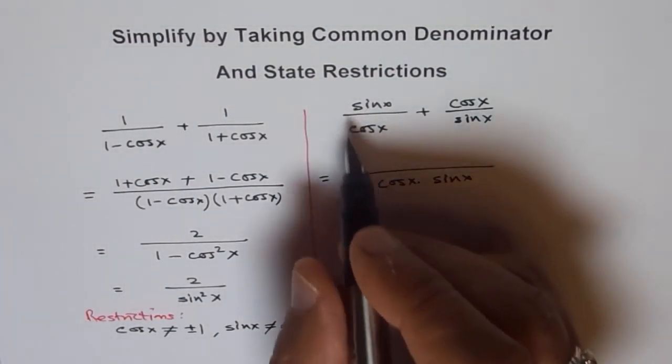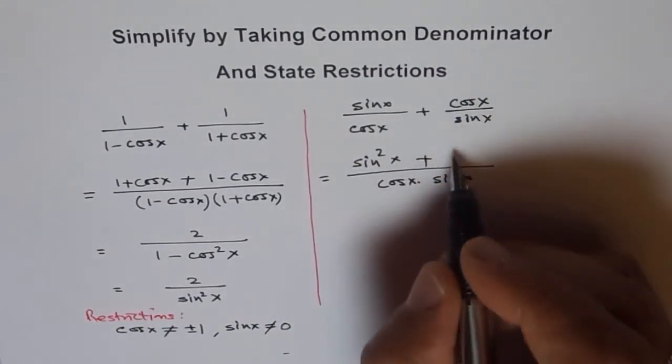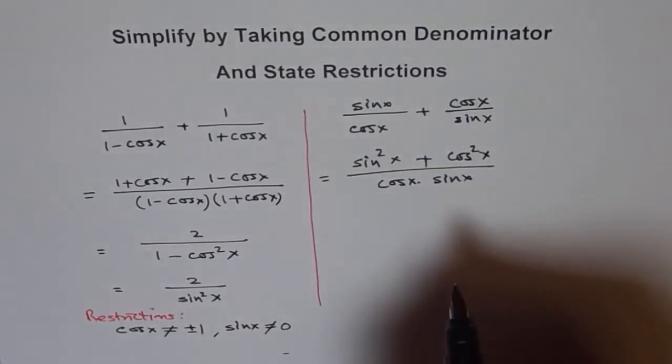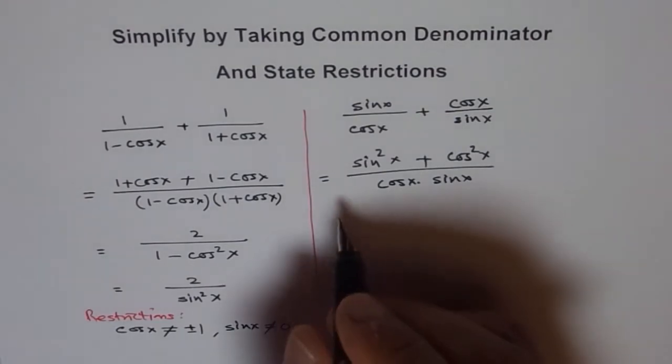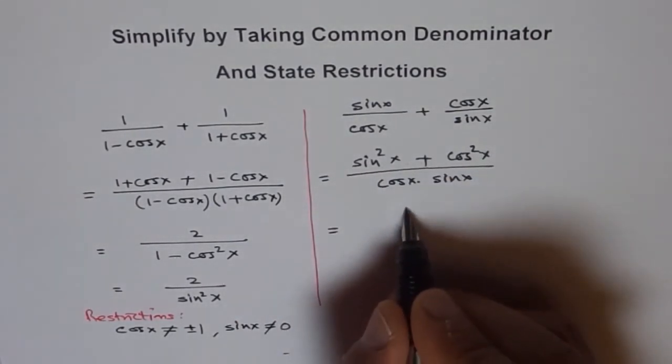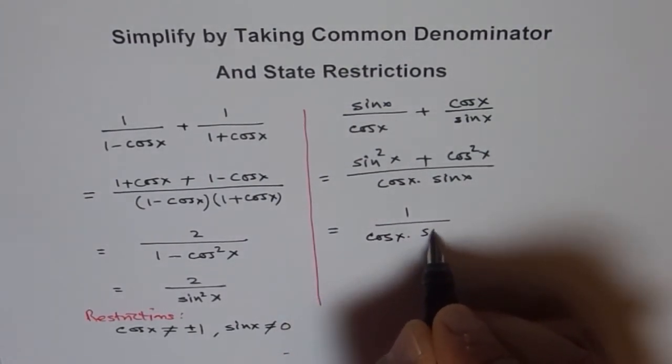And then we cross multiply because to make it cos x sin x, we have to multiply both by sin x. So we get sin square x plus this one becomes cos square x. These are also applications of using your Pythagorean identities for trigonometry. Sin square x plus cos square x is 1. So we can write this as 1 over cos x times sin x.